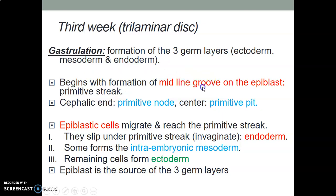How does this begin? You begin with the formation of a midline groove on the epiblast, and this midline groove is what we call the primitive streak. The primitive streak has a cephalic end — the cranial portion — which is the primitive node. This primitive node has a central portion called the primitive pit. Epiblastic cells migrate and reach the primitive streak, then slip under it or invaginate to form the endoderm. A second wave of epiblastic cells migrate to the primitive streak and form intraembryonic mesoderm.